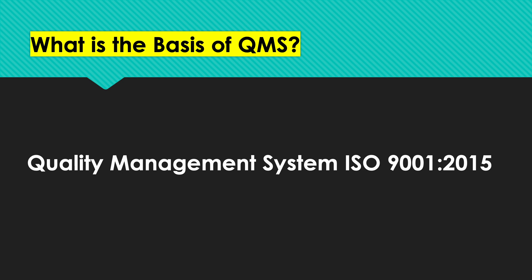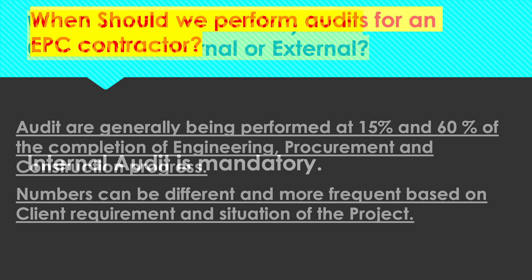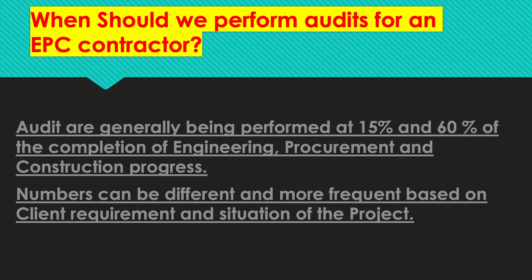I am talking about those projects which are following American standards. Which audit is mandatory for a company — internal or external? Internal audit is mandatory. When should we perform an audit for an EPC contractor? Audits are generally performed at 15% and 60% of the completion of engineering, procurement, or construction progress — separately.